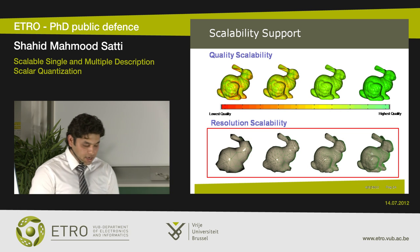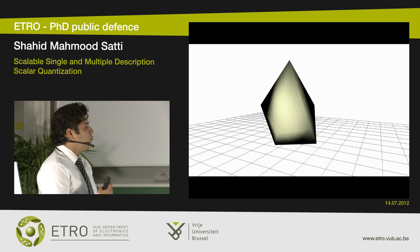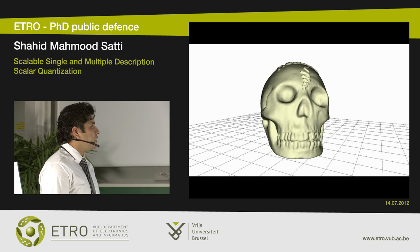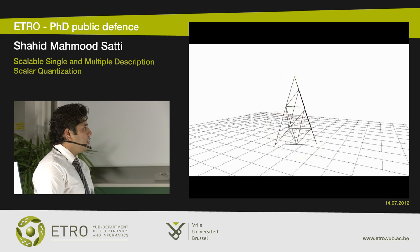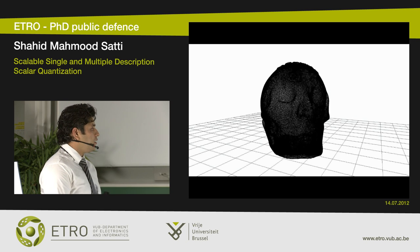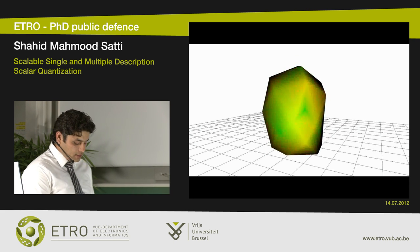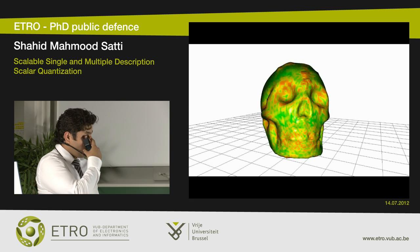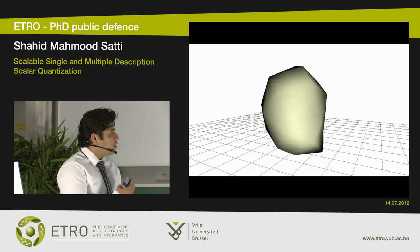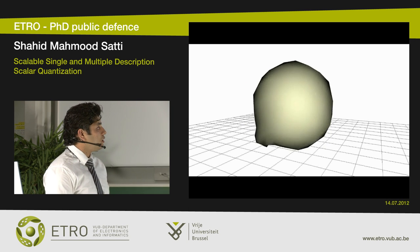A demo of scalable decoding of the skull mesh shows that receiving more and more data allows reconstruction of better quality. Due to its scalable nature, decoding can be stopped at any point to reconstruct an intermediate quality mesh. In wireframe view, vertices and edges refine as more rate is decoded. With color visualization, red shows error relative to the original input mesh, and decoding more data progressively yields a green mesh.